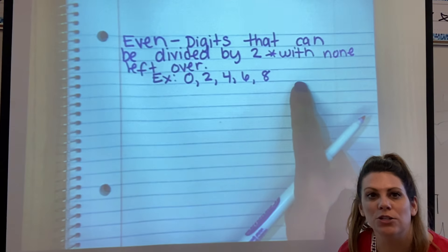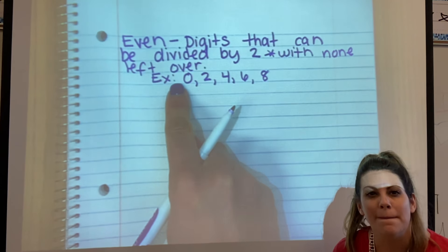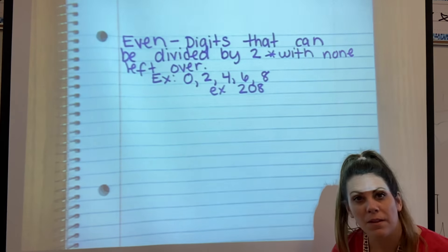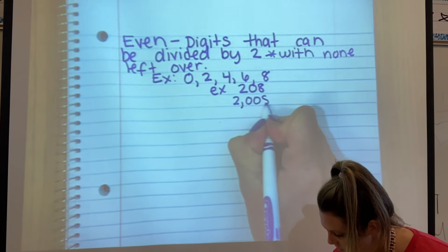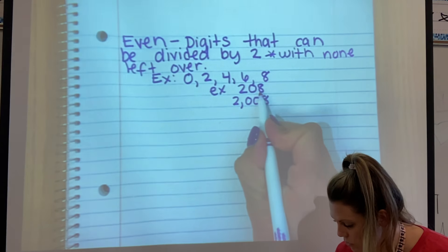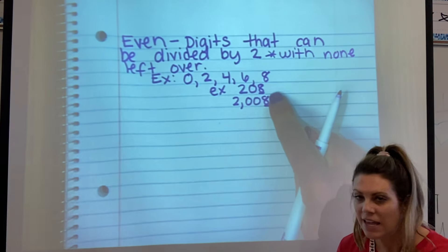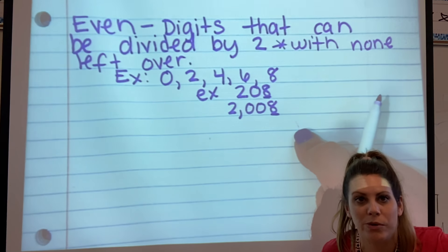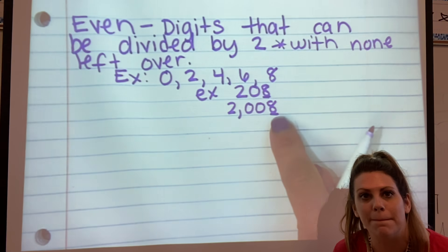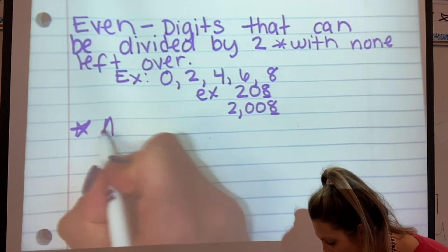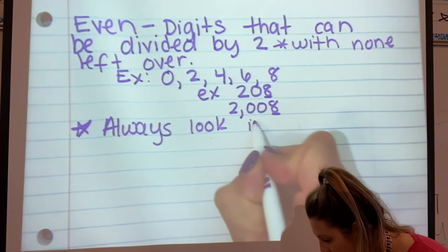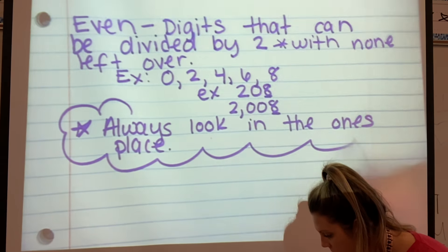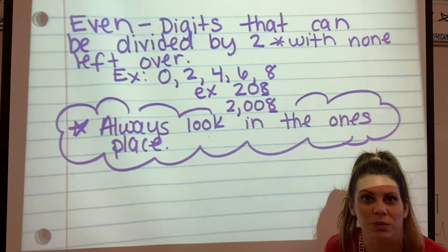We want to make sure the digits in our numbers are even. But what if it's a big number? Don't freak out. You always look in the one's place. If the digit in the one's place is a zero, two, four, six, or eight, it's even — even if it has a million numbers in front of it. You don't have to worry about any of that. Just worry about the number in the one's place. Always look in the one's place — that is the top secret clue to help you.